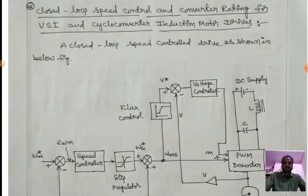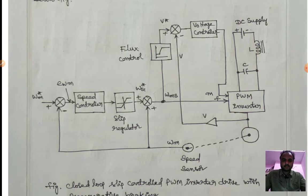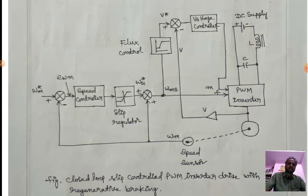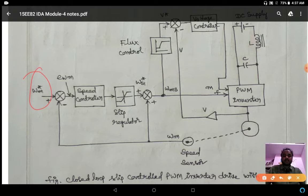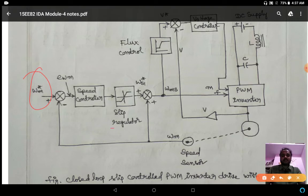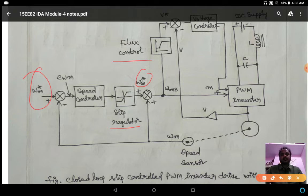Looking at the block diagram for closed loop operation of an induction motor drive: the input is the speed reference, which is given to the speed controller and slip regulator. Since the induction motor has one synchronous speed value and one motor speed value, we use a slip regulator. The speed reference is then used to control the flux.